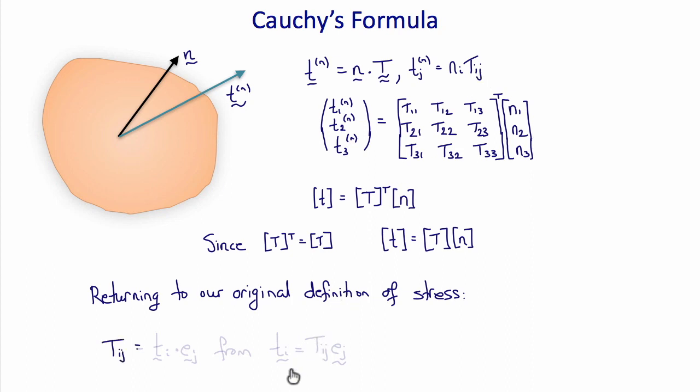And then just to remind you of our original earlier definition of the stress, was that t i-j equals t i dot e-j. This is just a special case of Cauchy's formula when the unit normal vector n is the unit vectors of our coordinate frames e-j.